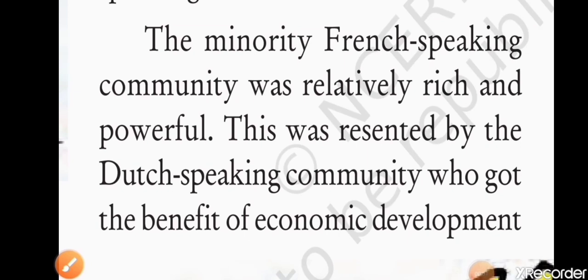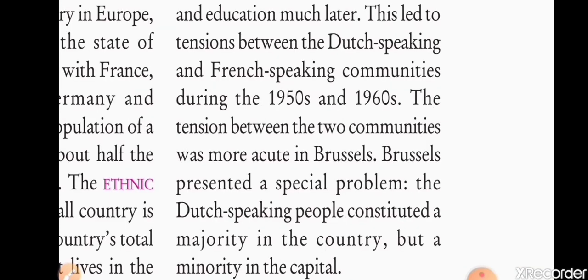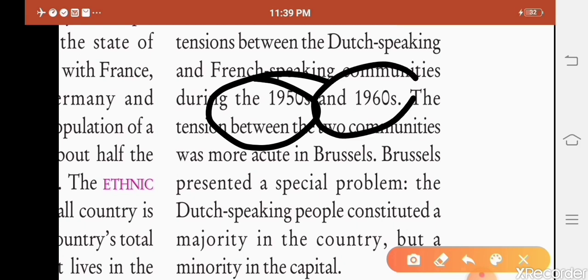The source of tension between the communities was that the minority French-speaking community was relatively rich and powerful. The Dutch-speaking majority was not as educated or prosperous — they got education and prosperity much later than the French people. This led to tension between the Dutch-speaking and French-speaking communities.